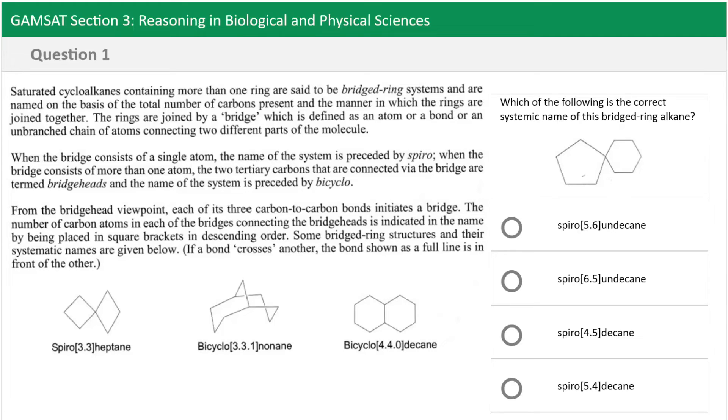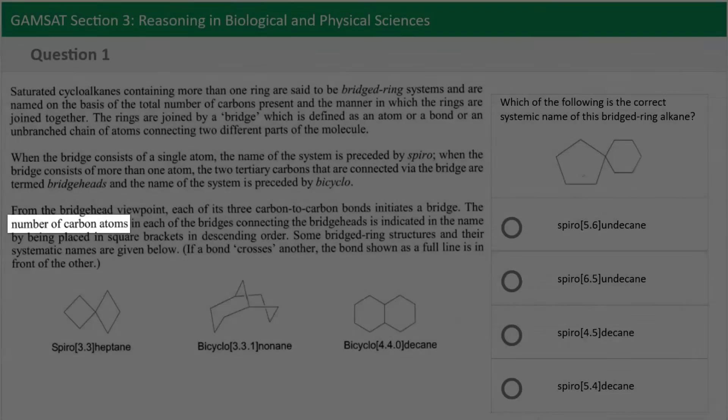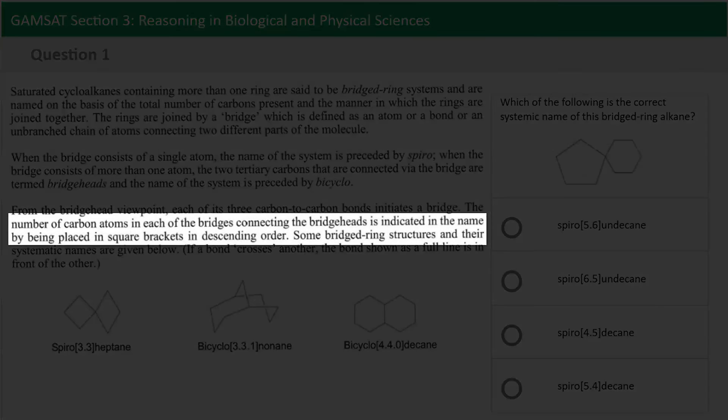So if we make that our goal to figure out which order should it be and we have a look at the text we can see, and I'm skimming the text now, that there's references to numbering in the third paragraph. So here let's have a read: the number of carbon atoms in each of the bridges connecting the bridge heads is indicated in the name by being placed in the square brackets.